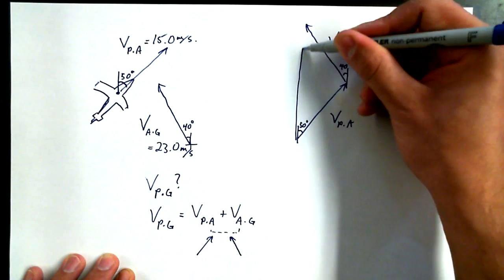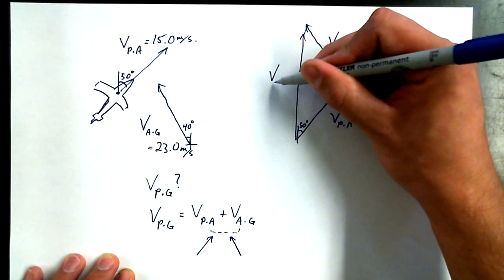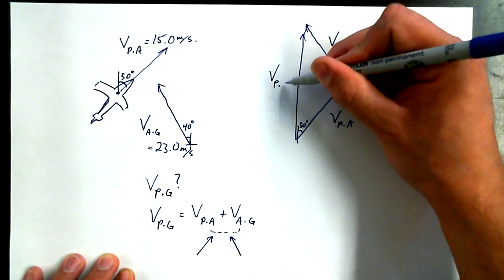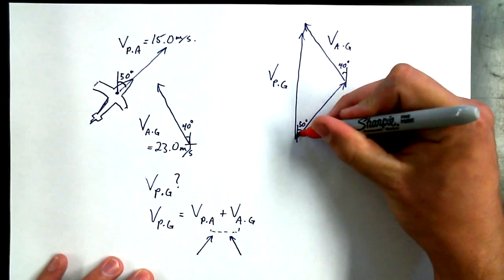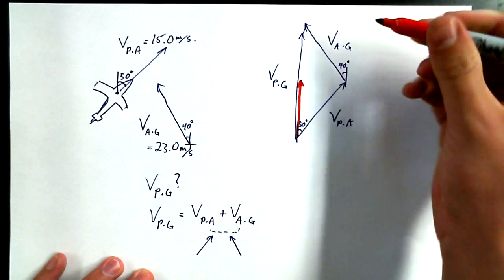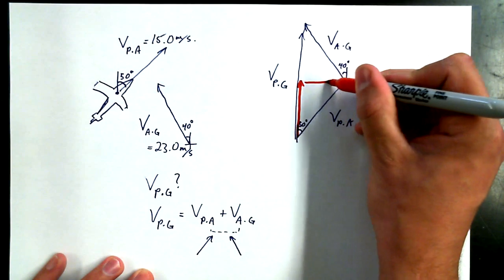And if I wanted to know the velocity of the plane relative to the ground, it would just be the resultant. And people say, oh, that's a weird O shape, how am I ever going to do this? Well, we talked about this two days ago. We talked about X components and Y components, right? I could find the Y component of this vector and I could find the X component of this vector.